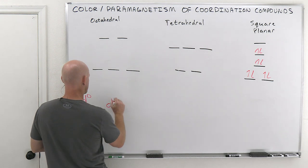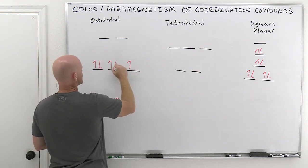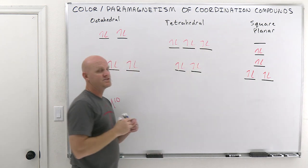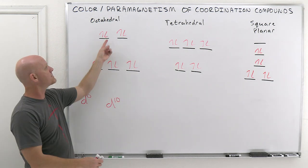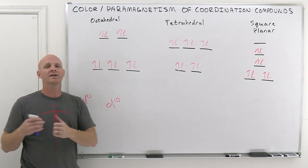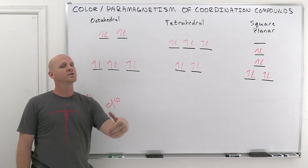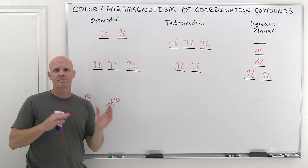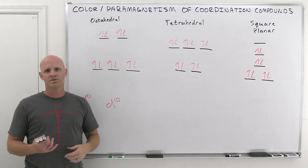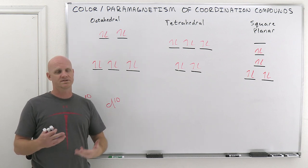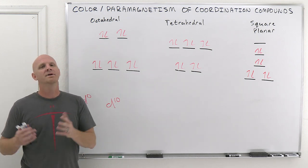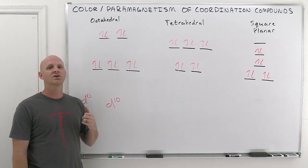The other side of the coin is D10. Whether you fill it in low spin or high spin — octahedral or tetrahedral — you do have electrons in the lower energy sets, but there's no empty spot up high because they're full as well. So for D10, there's no reason it should be absorbing visible light — we don't expect it to be colored. So if you have D1 through D9, we should expect that compound to be colored. If you're D0 or D10, we expect it to be colorless.